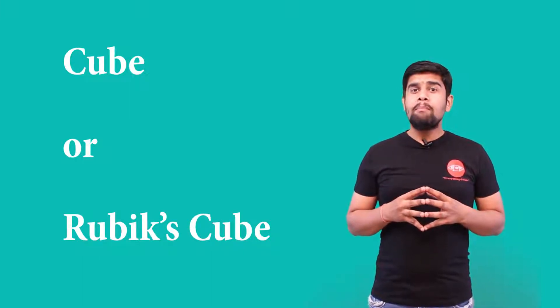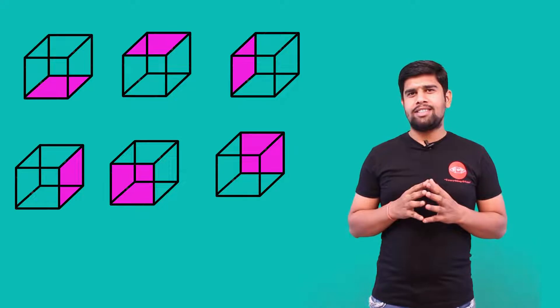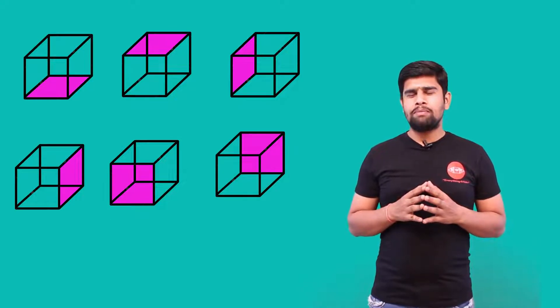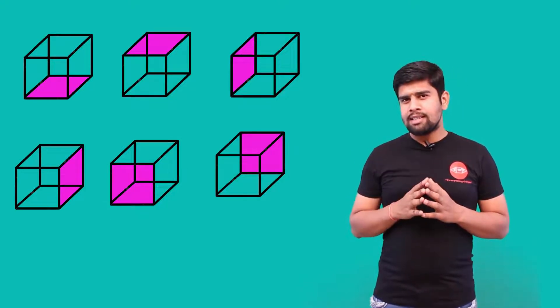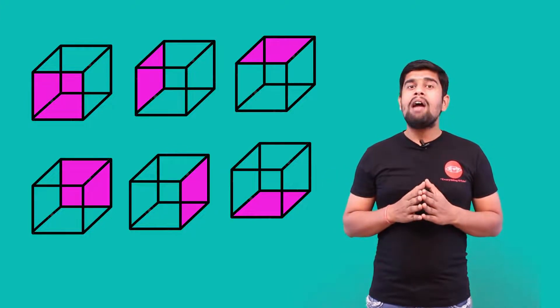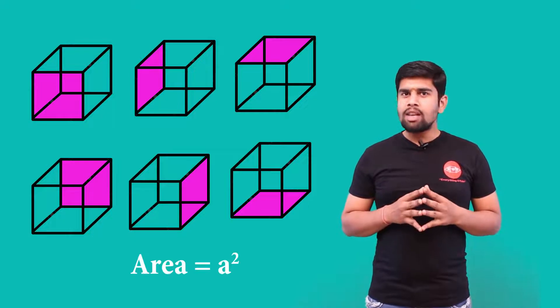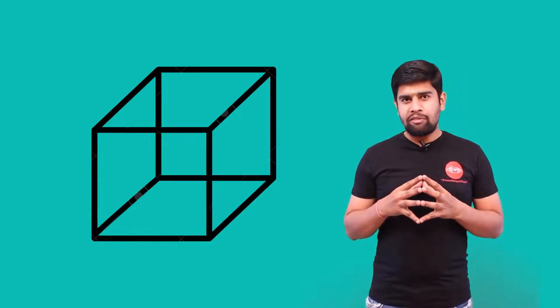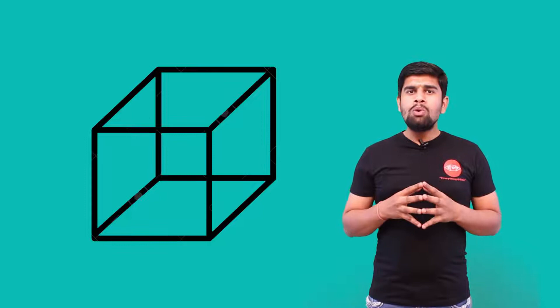A cube is made up of six square faces, each having area a squared. If you assemble all six faces — two at front and back, two on the sides, and two at top and bottom — you get a 3D solid figure: the cube.